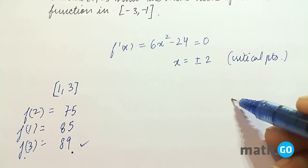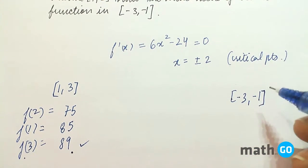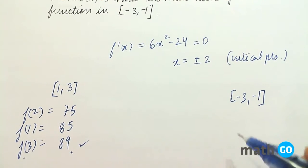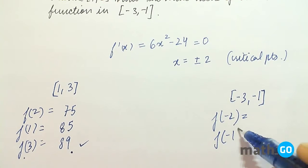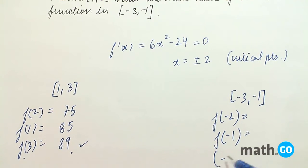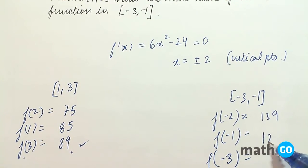For minus 3 minus 1, it will be checked at minus 2, minus 1 and minus 3. f of minus 2 will come out to be 139. Minus 1 will come out to be 122.